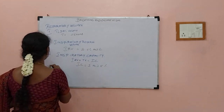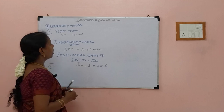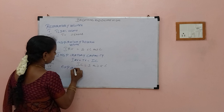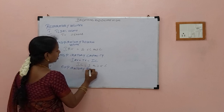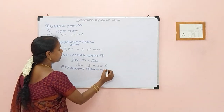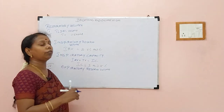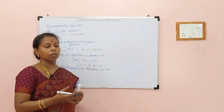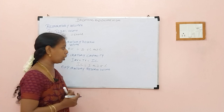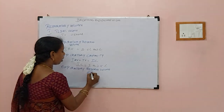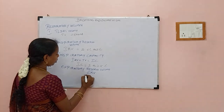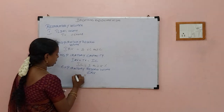The next one is expiratory reserve volume. Expiratory reserve volume is the volume exhaled forcefully — for example, after running or jogging we will be exhaling extra air. That exhaled volume we call expiratory reserve volume, or ERV, which is around 1000 to 1100 ml.